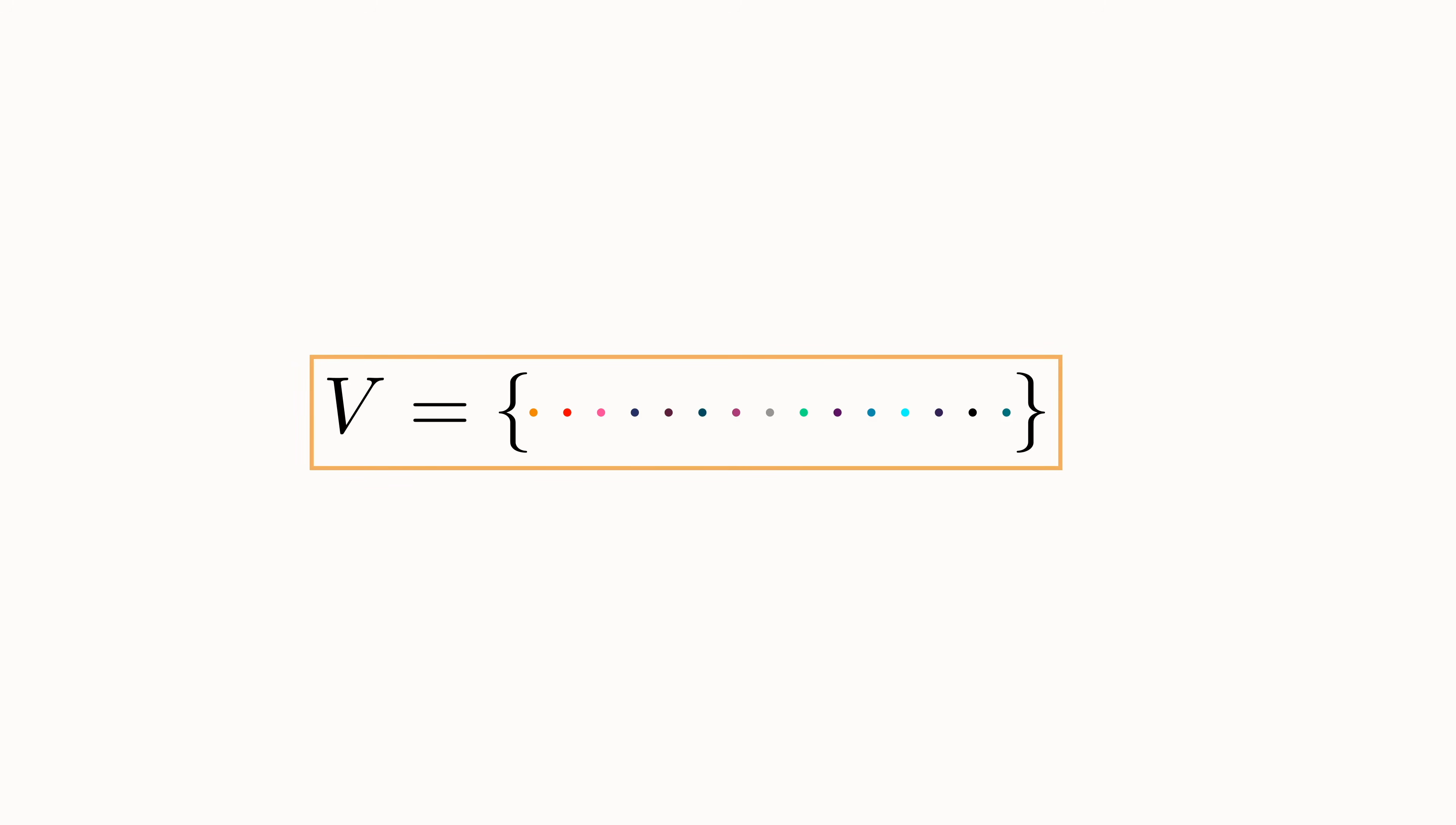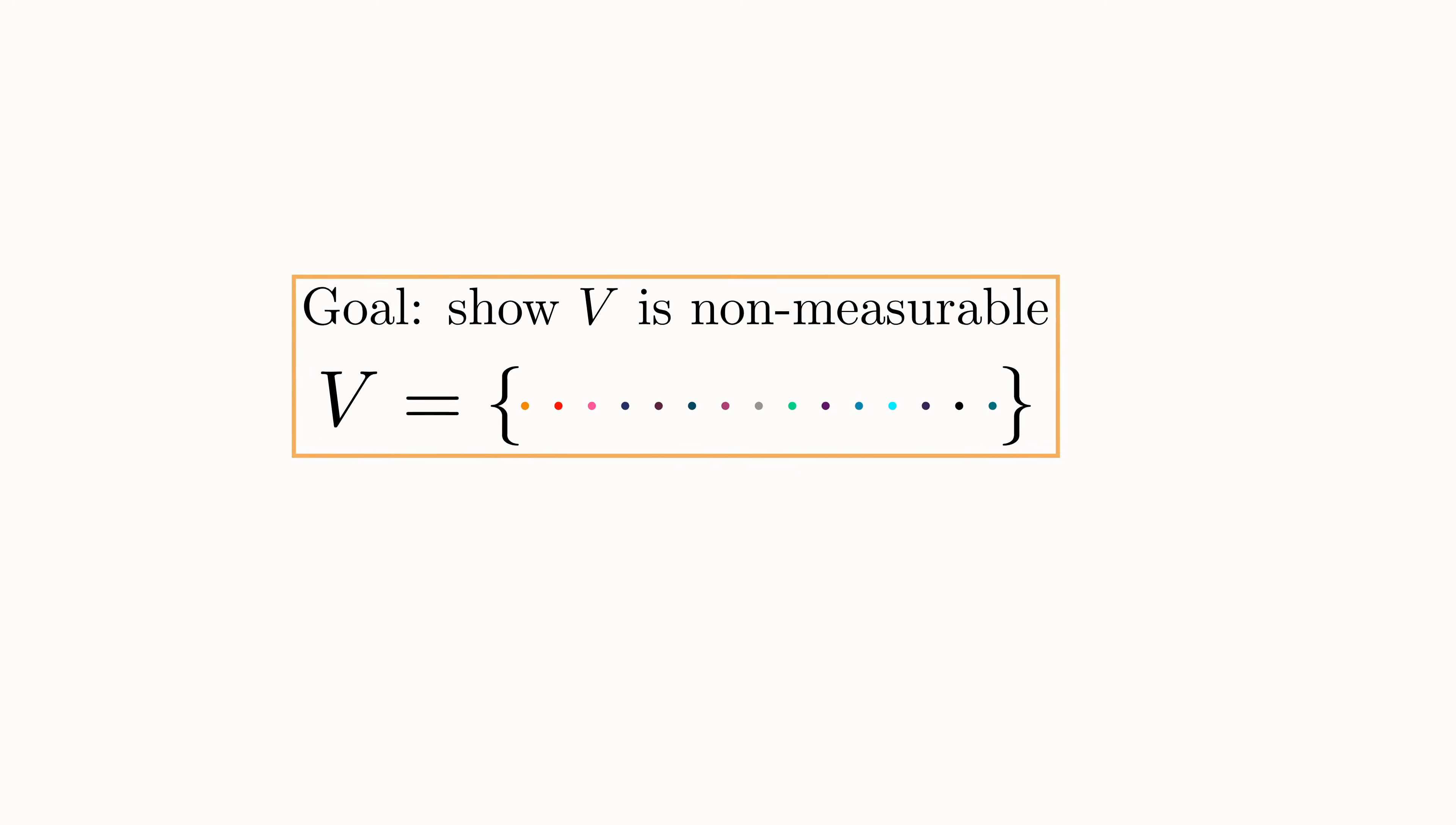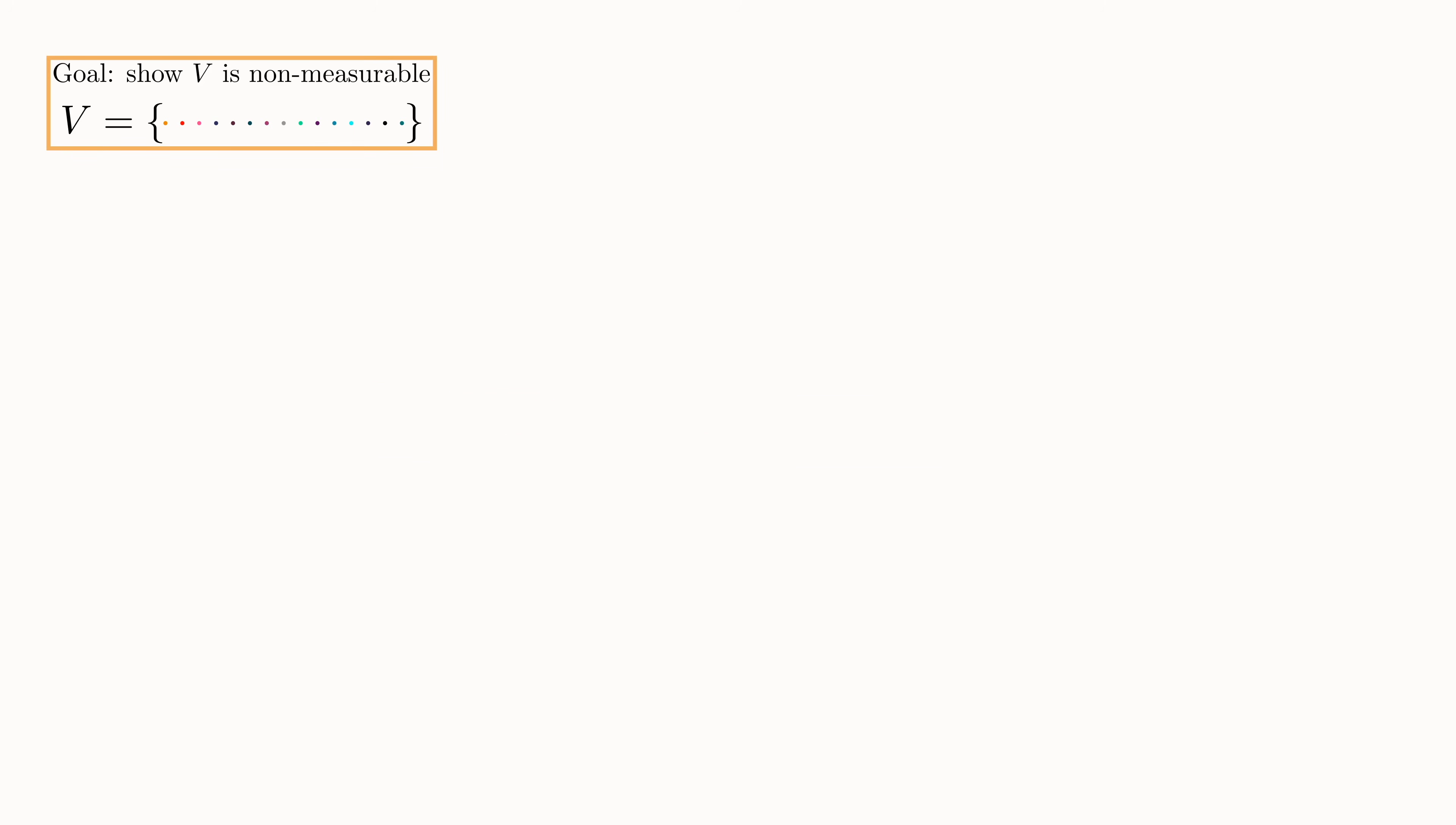This is the set that Vitali discovered. A set that is non-measurable. It has no size. As soon as you try to assign any size to V, it must result in a logical contradiction. I'll now show you why.